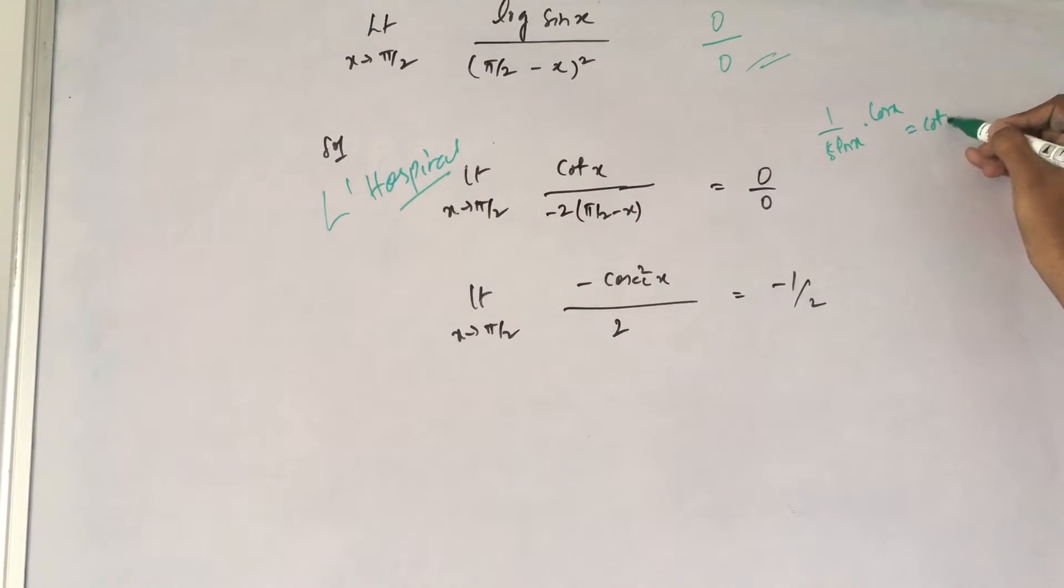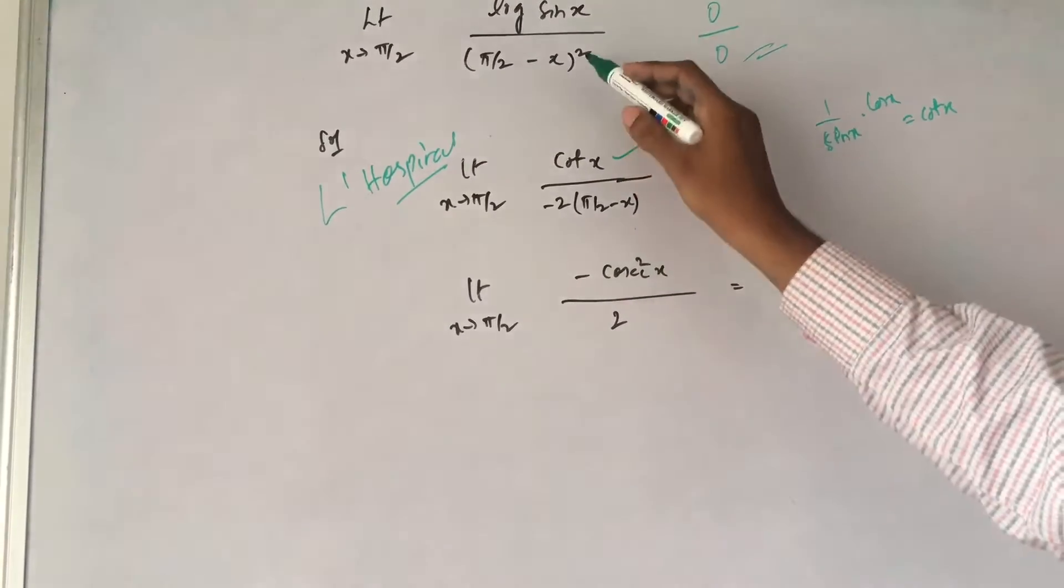So I get cot x. That is what we have written. Differentiation of this becomes this.